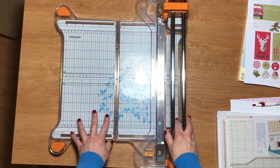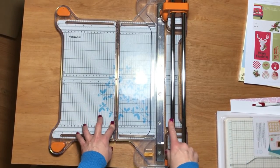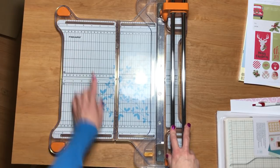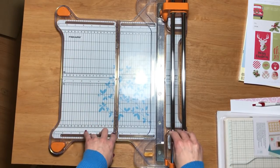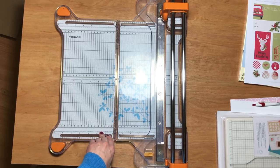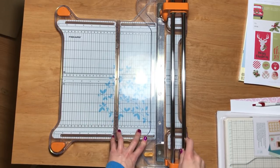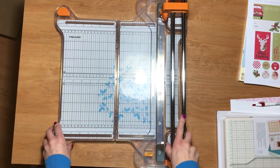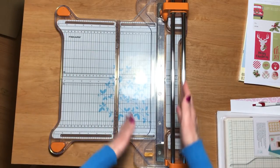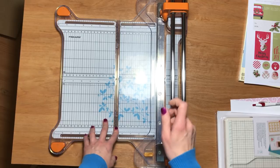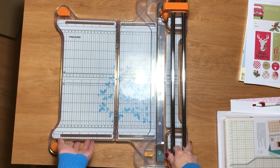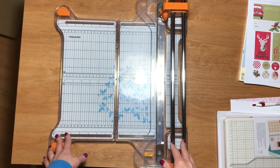So first of all, I own the Fiskars Precision Rotary Bypass Tremor. That's what this is called. This was my first purchase after having a small single blade cutter, and I just got tired of replacing the blades all the time. It was just too expensive.